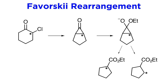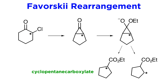An elegant way to confirm that a symmetrical intermediate is formed is shown in the following scheme. Alpha-chlorocyclohexanone was labeled at the C1 bearing position with a 14C label. Favorski rearrangement gave the cyclopentane carboxylate, in which the label was then found equally distributed in the alpha and beta positions, confirming the intermediacy of the cyclopropanone, which can be opened both ways with equal probability.